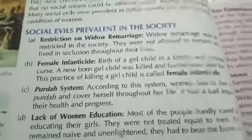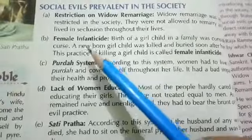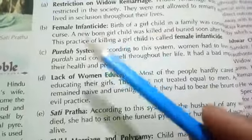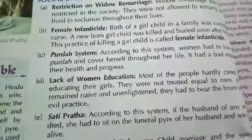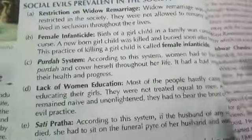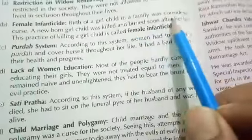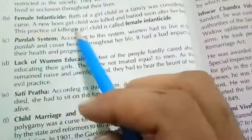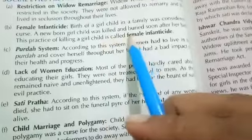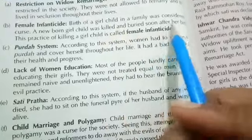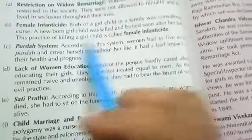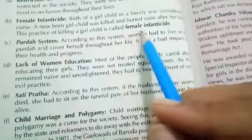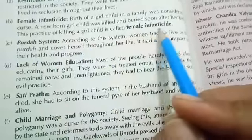Next is female infanticide. The birth of a girl child in the family was considered a curse. A newborn girl child was killed and buried soon after her birth. This practice of killing a girl child is called female infanticide.